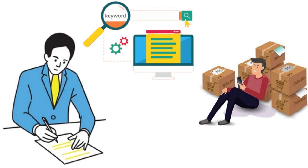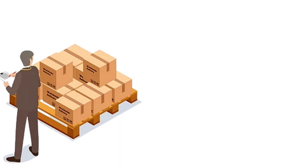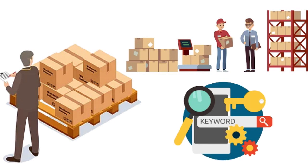Use popular eBay acronyms like VGC (very good condition), BN (brand new), BNiB (brand new in box), or BNWT (brand new with tags). Be honest about all issues and defects — buyers can leave bad reviews and ask for refunds if the item isn't in the condition you described. Mention how often the product has been used or why you are selling it, and include all packaging, tags, and instruction books if relevant.